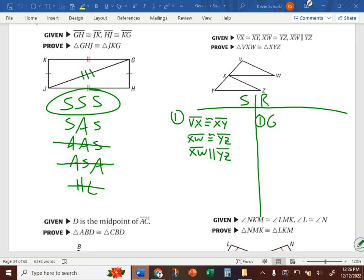While you write it, I am going to calibrate because my pen's a little bit off. The given statement is segment VX is congruent to XY, XW is congruent to YZ, and XW is parallel to YZ. Okay? And all three of those things are given.